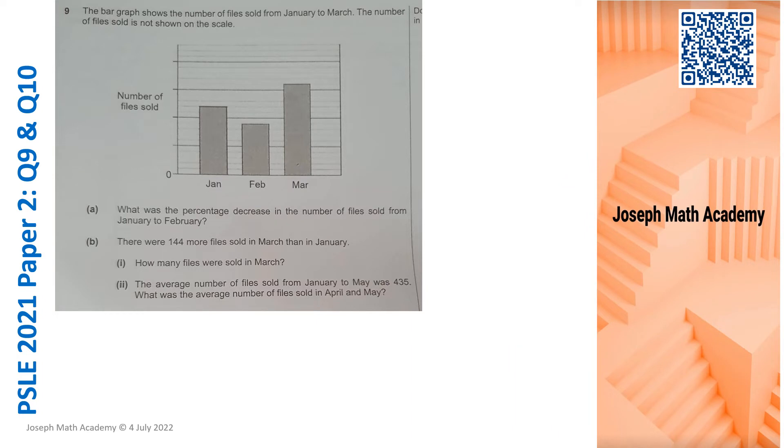Let's take a look at the first question, Question 9. The bar graph shows the number of files sold from January to March. Now one problem here is that we are totally unsure what is along the vertical axis. It's an unfamiliar bar graph. Normally we have values along the y-axis but this time we don't get to see.